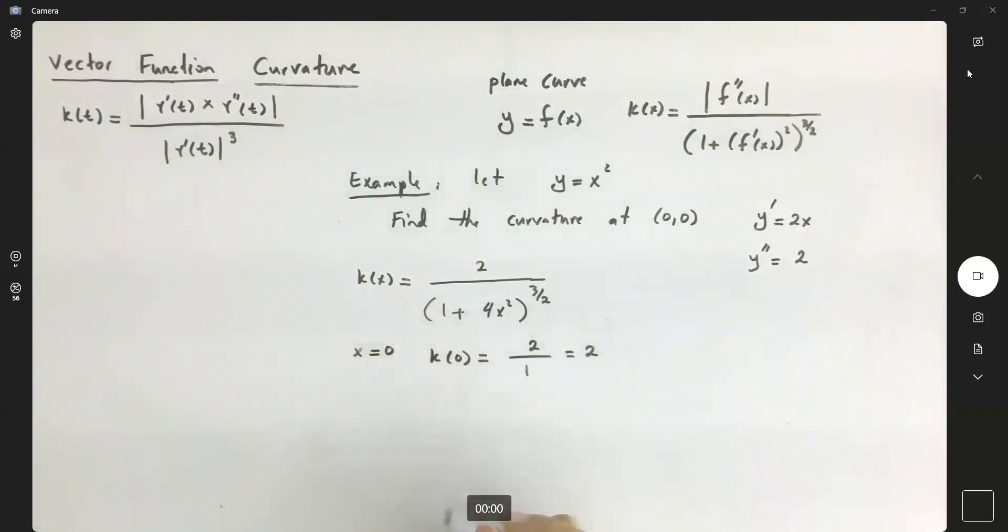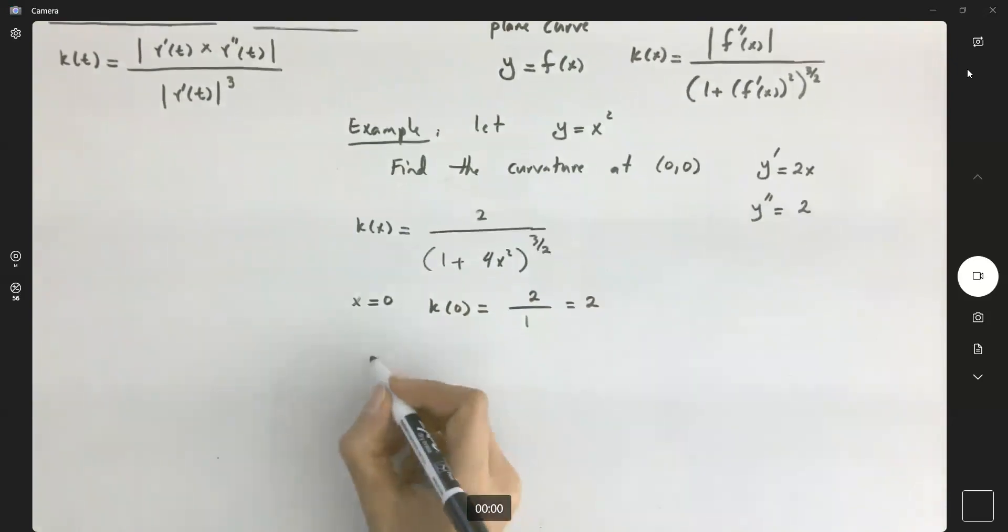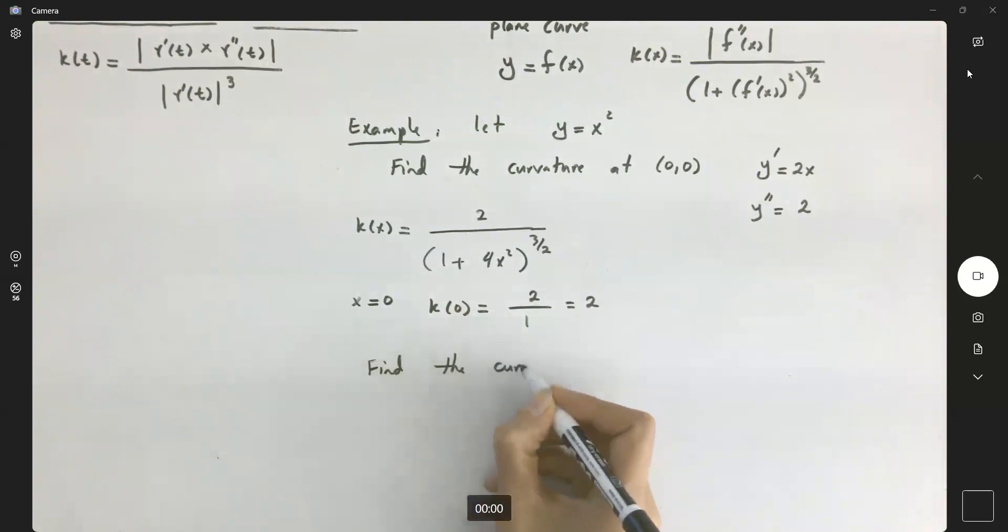Now if you change these points, suppose now you want to find the curvature at 1 and 1. k of 1 becomes 2 divided by 5.